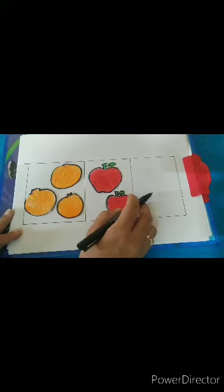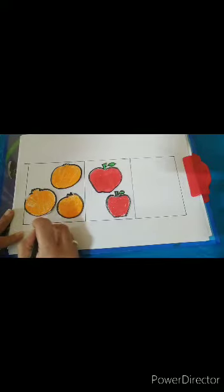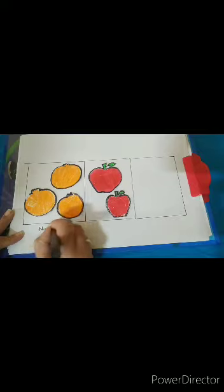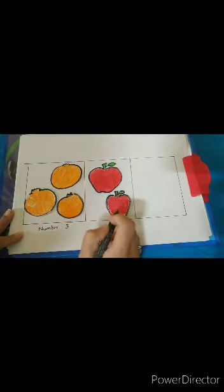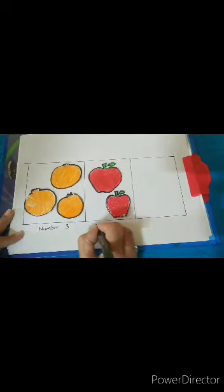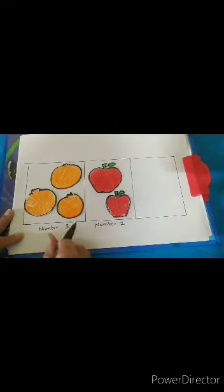And in the third box, there is nothing. In the first box, number three is there. In the second box, number two is there. Two apples, so number two. Three oranges, so number three.